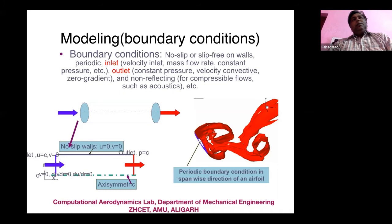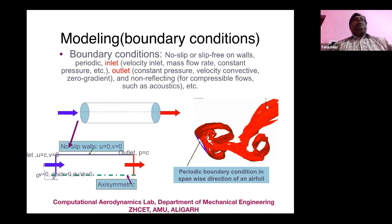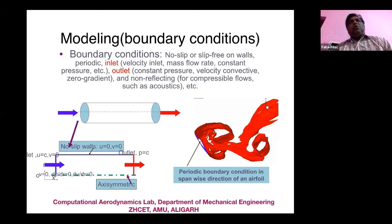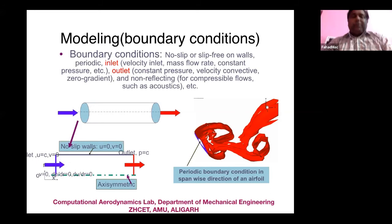For turbulent pipe flow, fully developed turbulence takes a long distance to develop, requiring large computational resources to simulate from inlet to outlet. Instead, you can enforce fully developed conditions and use periodic boundary conditions to shorten the domain — this is how turbulent pipe flows are commonly simulated. However, if you want to study transitional flow you must simulate the whole pipe, which is computationally expensive. There is always a trade-off.